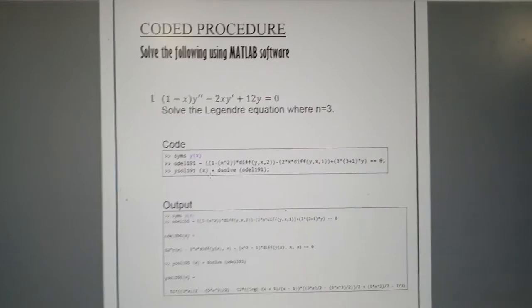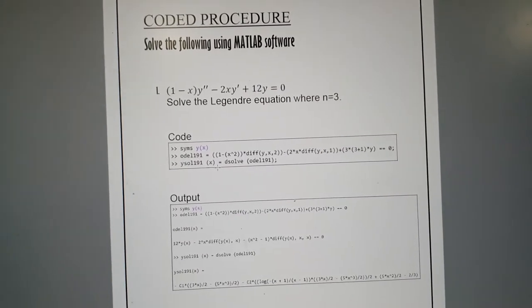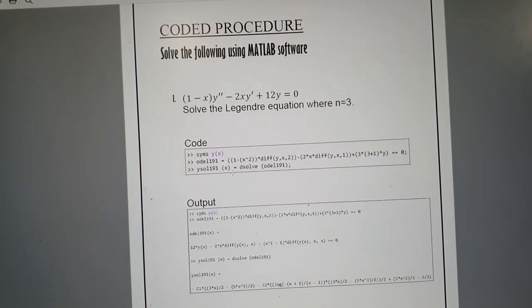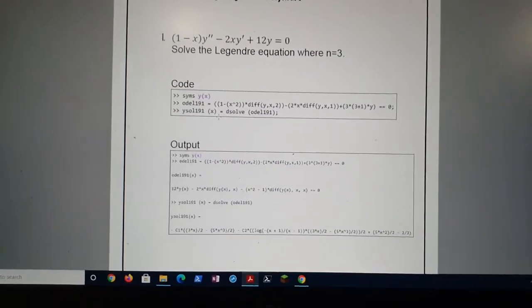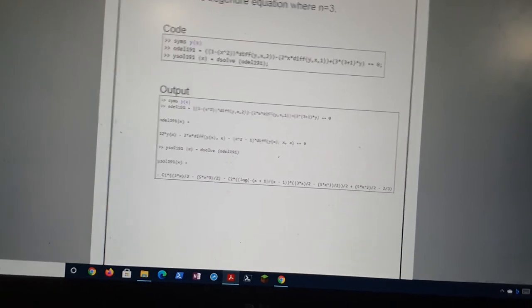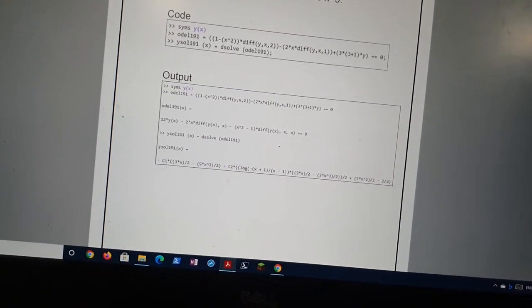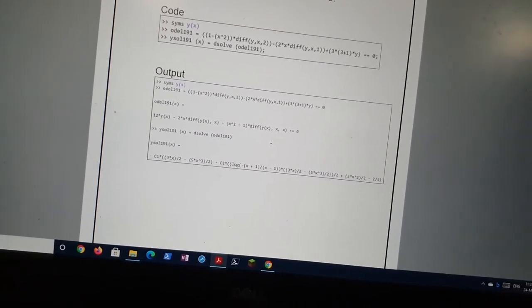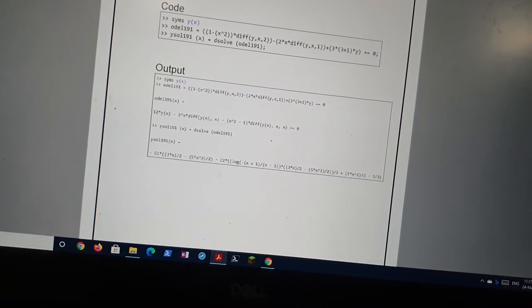We use Dsolve which basically solves the differential equation where the equation is a symbolic equation. So we get the output. Since we have n = 3, we have a definite unique output. So as you can see here, we have C1 * 3(3x/2) and this is the full equation.